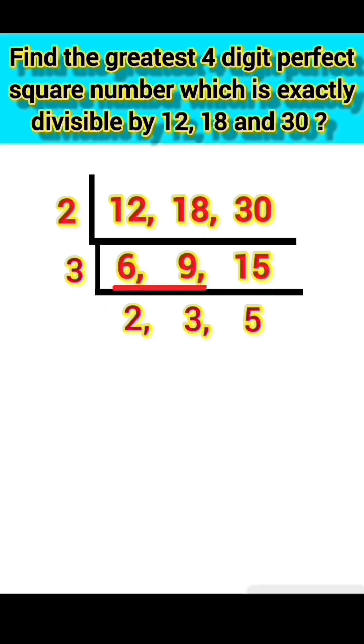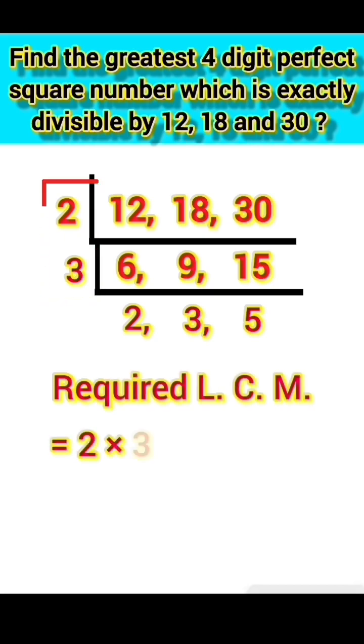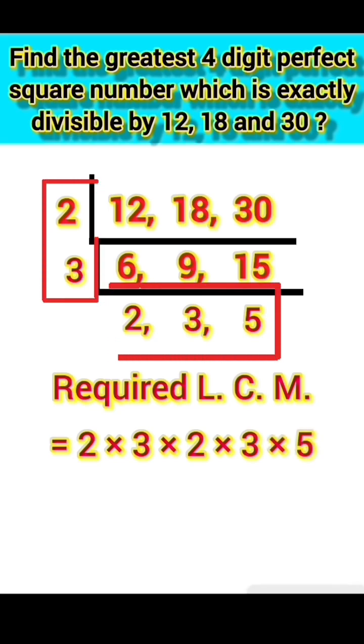All are prime numbers. So our LCM is the product of these numbers: LCM equals 2 × 3 × 2 × 3 × 5. Now let us multiply this number. 2 × 3 is 6, 6 × 2 is 12, 12 × 3 is 36, 36 × 5 is 180.